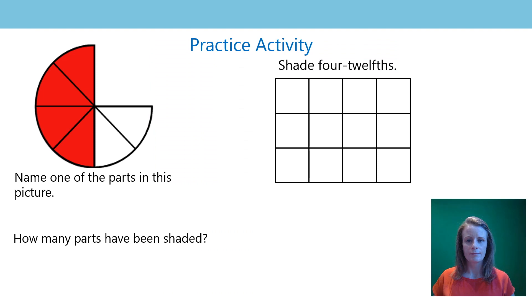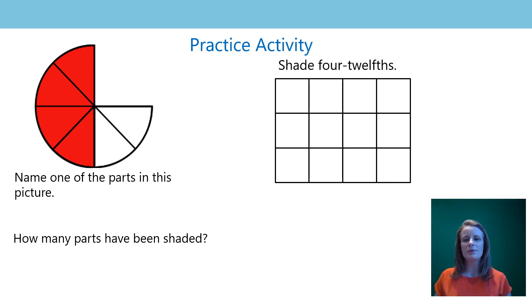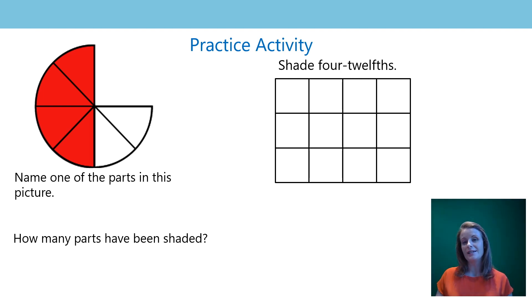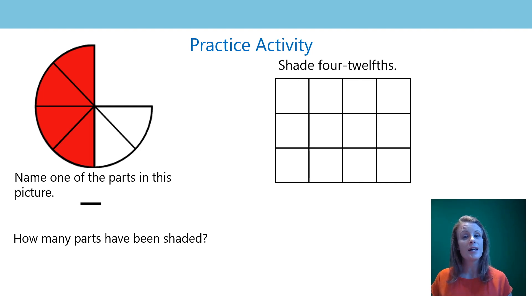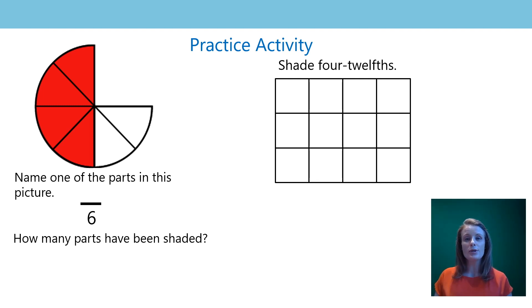Let's begin. So to look at our practice activity from the last lesson, I gave you this interesting shape to start with. If you've looked at these lessons previously, you will have seen this shape before. I'm going to describe it as part of a circle. My part of a circle has been split into equal parts. I said: name one of the parts in this picture. Did you see it was one sixth? My whole has been divided into equal parts. I use the division bar to show me. I know that it's been divided into six equal parts, so the six goes on the bottom — that's my denominator. Then, if I just want one of those parts, the one goes on the top — my numerator. So one equal part is called one sixth.